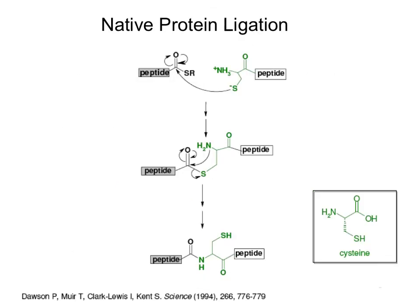In native chemical ligation, you start off with two peptide fragments. One peptide on the C-terminus has a thioester, and the other peptide at the N-terminus has a cysteine. This undergoes nucleophilic attack — electrons come up, kick off the SR, generating a thioester bond. Once this thioester bond is generated, it undergoes intramolecular cyclization, where electrons come up and down, kick this off to generate a seamless amide bond.